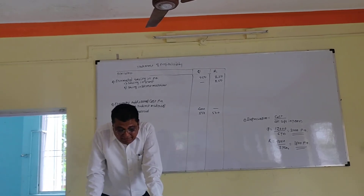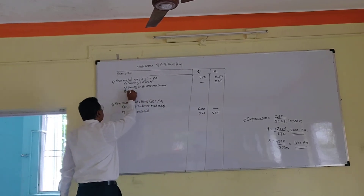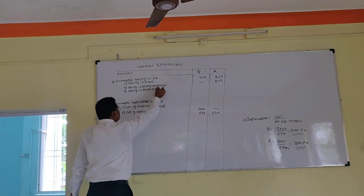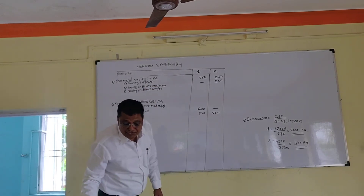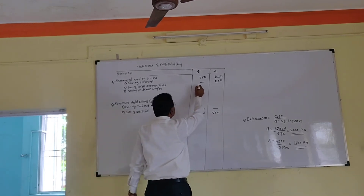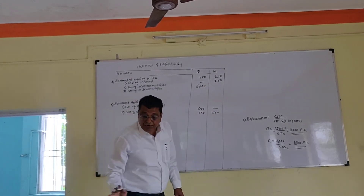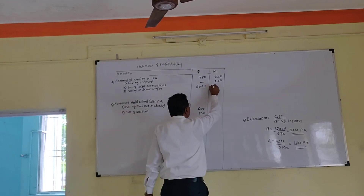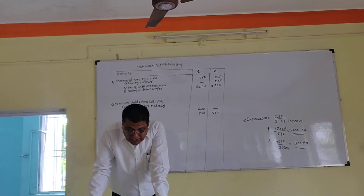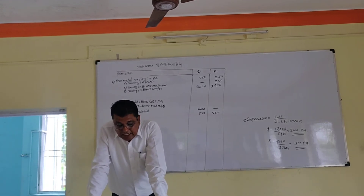Next, estimated saving in direct wages. Saving in direct wages: Q = 6,250. For model R, saving in direct wages is 2,250.